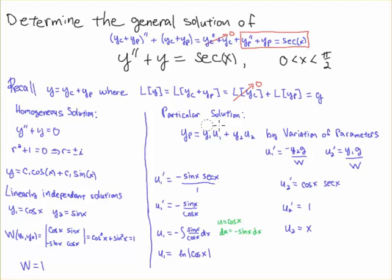Next up, u2 primed is cosine. That comes from the y1 here, times the right-hand side, which is g. And that's cosine times secant, and that's just simply one. So u2, after I integrate, just gives me x.